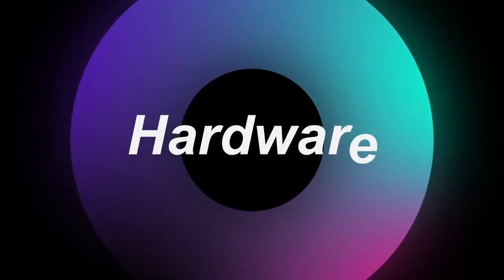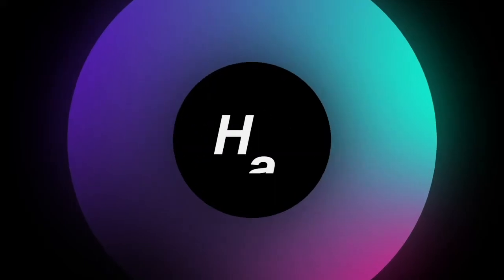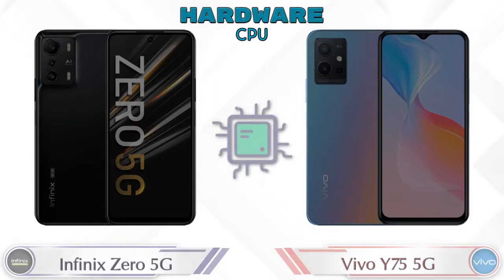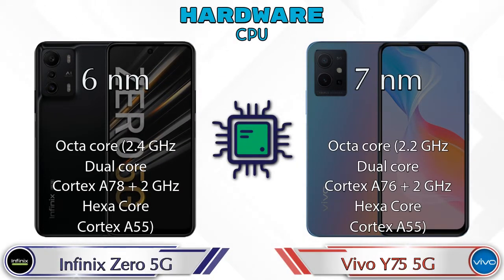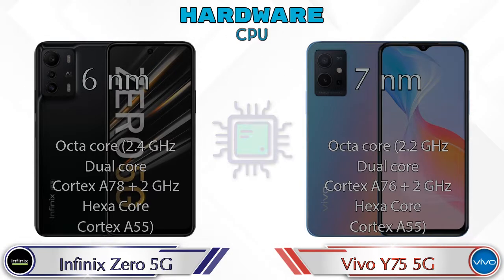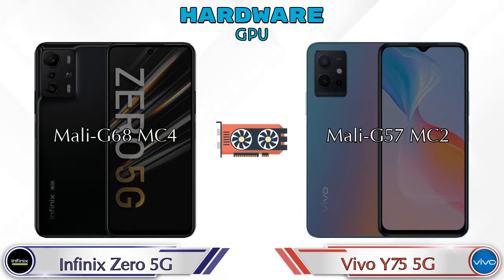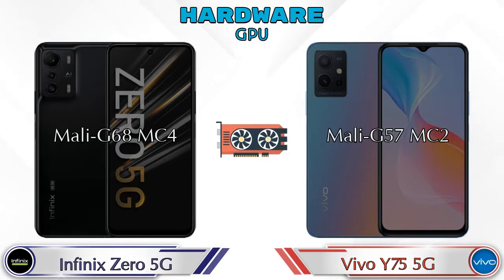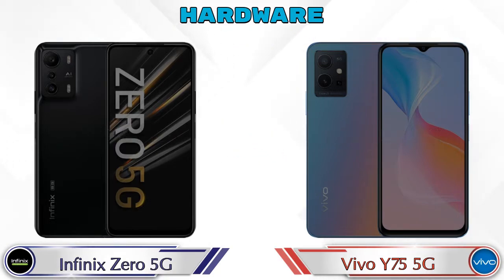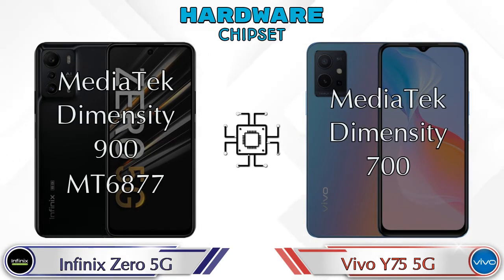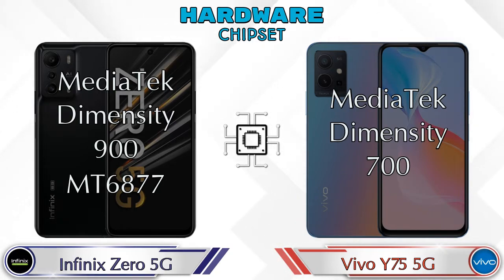First, let's talk about the most important part of the phone — hardware. Starting with the CPU and GPU: the Infinix Zero 5G has a Mali-G68 MC4 GPU, while the Vivo Y75 5G has a Mali-G57 MC2. For the chipset, the Zero 5G uses MediaTek Dimensity T900 (MT6877), and the Y75 5G uses MediaTek Dimensity T700.